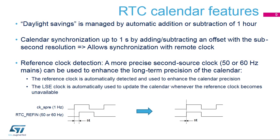This slide presents the main calendar features. Daylight savings can be managed by software with automatic one-hour addition or subtraction. It's possible to synchronise the RTC clock to a remote clock by adding or subtracting an offset to the sub-second register on the fly with CKA pre-clock resolution — a feature commonly used in RF applications. A reference clock at mains 50 or 60 Hz can be used to enhance long-term calendar precision. The reference clock is automatically detected. When the 1 Hz clock becomes misaligned due to LSE imprecision, the RTC shifts the 1 Hz clock so future edges are aligned, making the calendar as precise as the reference clock. When the reference clock is not available, the LSE clock is automatically used to update the calendar.